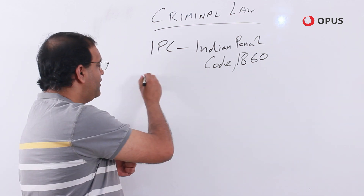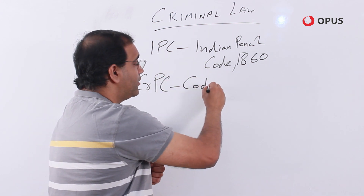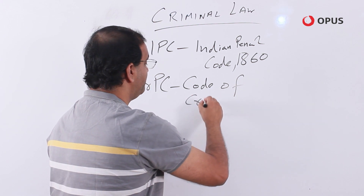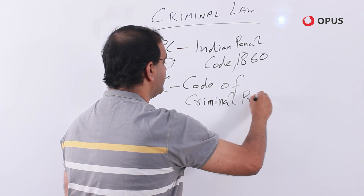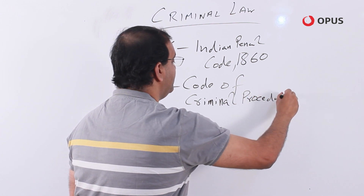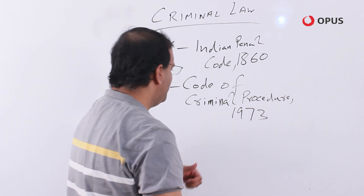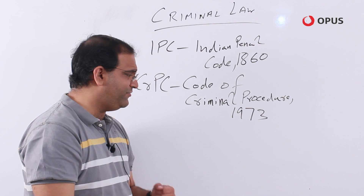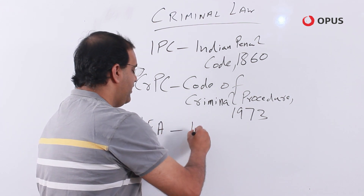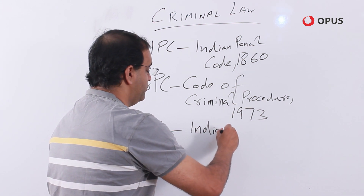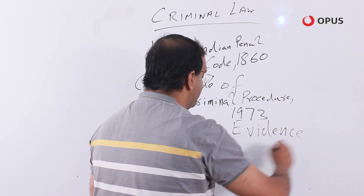Then we have the CrPC — the Code of Criminal Procedure, 1973. There was a Code of Criminal Procedure earlier as well, but that got repealed. The one currently in force is the CrPC of 1973. And lastly, the Indian Evidence Act of 1872 — a very ancient law, but very much in existence and very important as well.